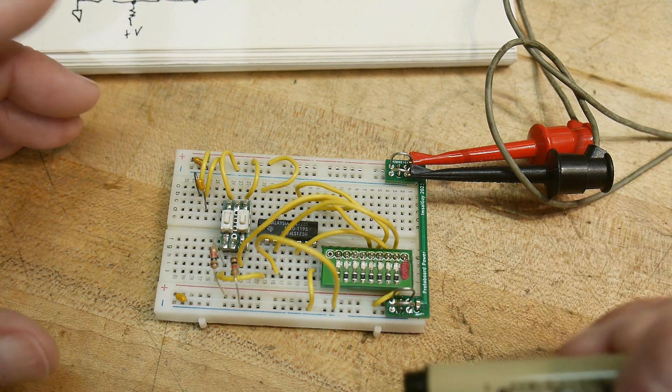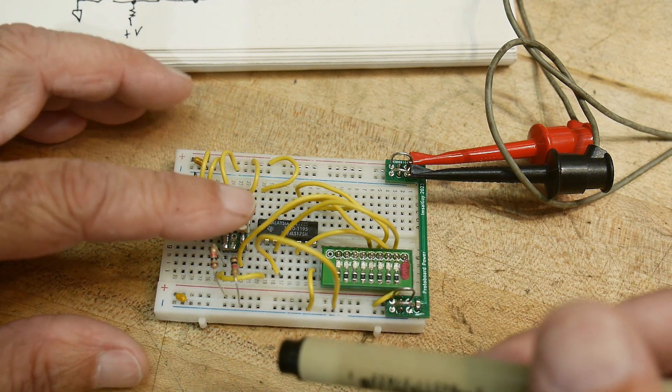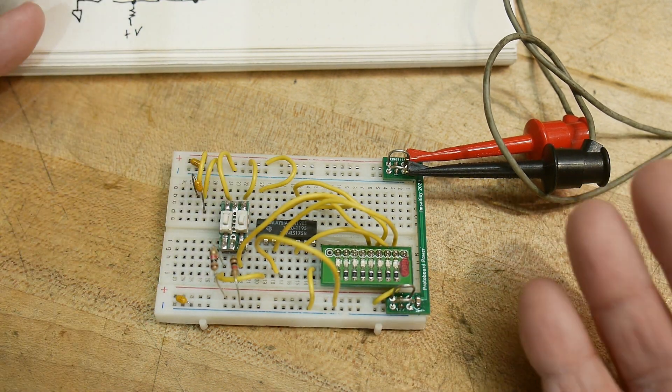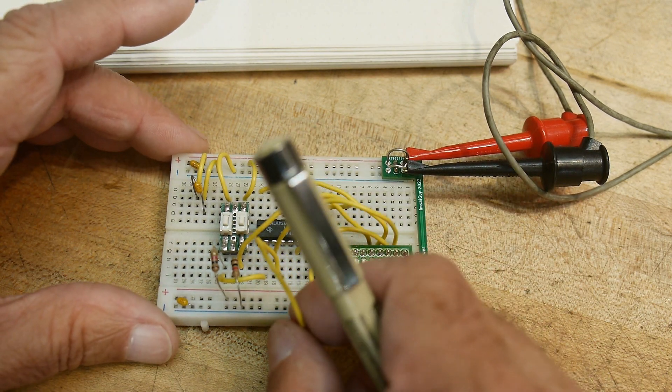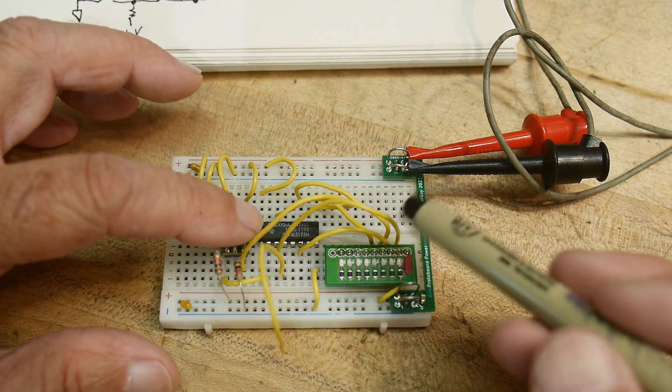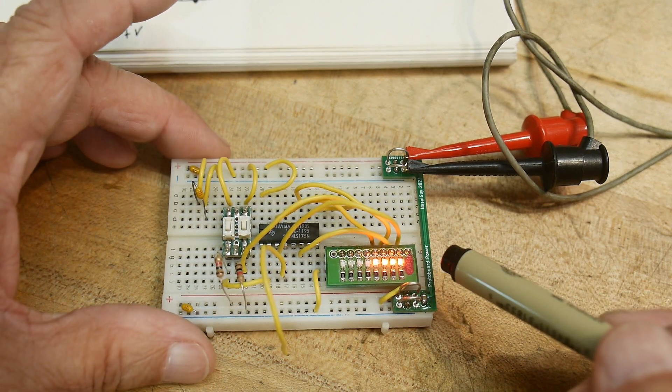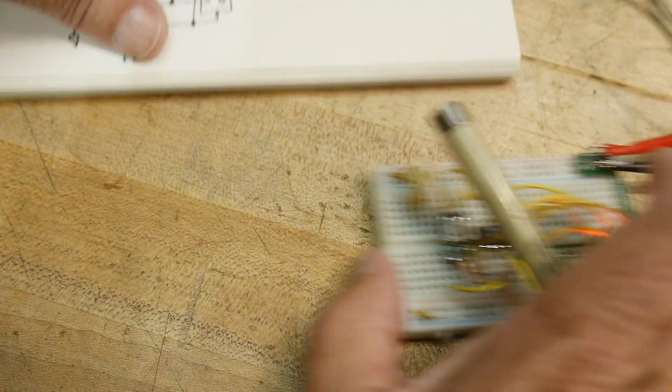So, all of the Qs are set to zero, zero, zero, zero. All right. Now, when we hit the clock, the rising edge, everybody goes high. Well, why did everybody go high?